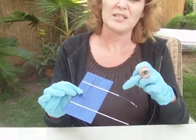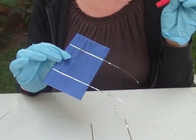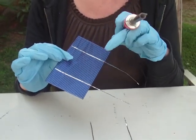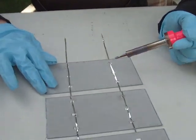Okay, now you can see that we've got our tabbing wire attached to the front of our cells, which is our negative positioning of our cells. I'm putting solder on the back here and joining them together.